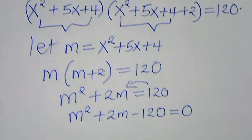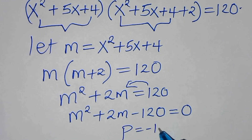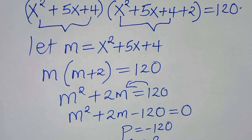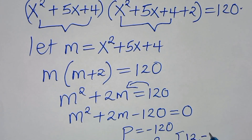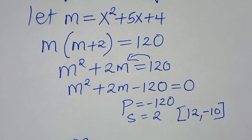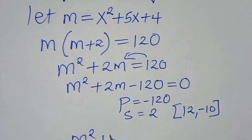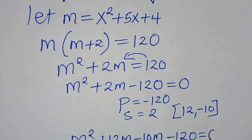From this quadratic in m, the product is -120 and the sum is 2. We identify two factors: 12 and -10, since 12+(-10)=2 and 12×(-10)=-120. Substituting: m²+12m-10m-120 = 0.